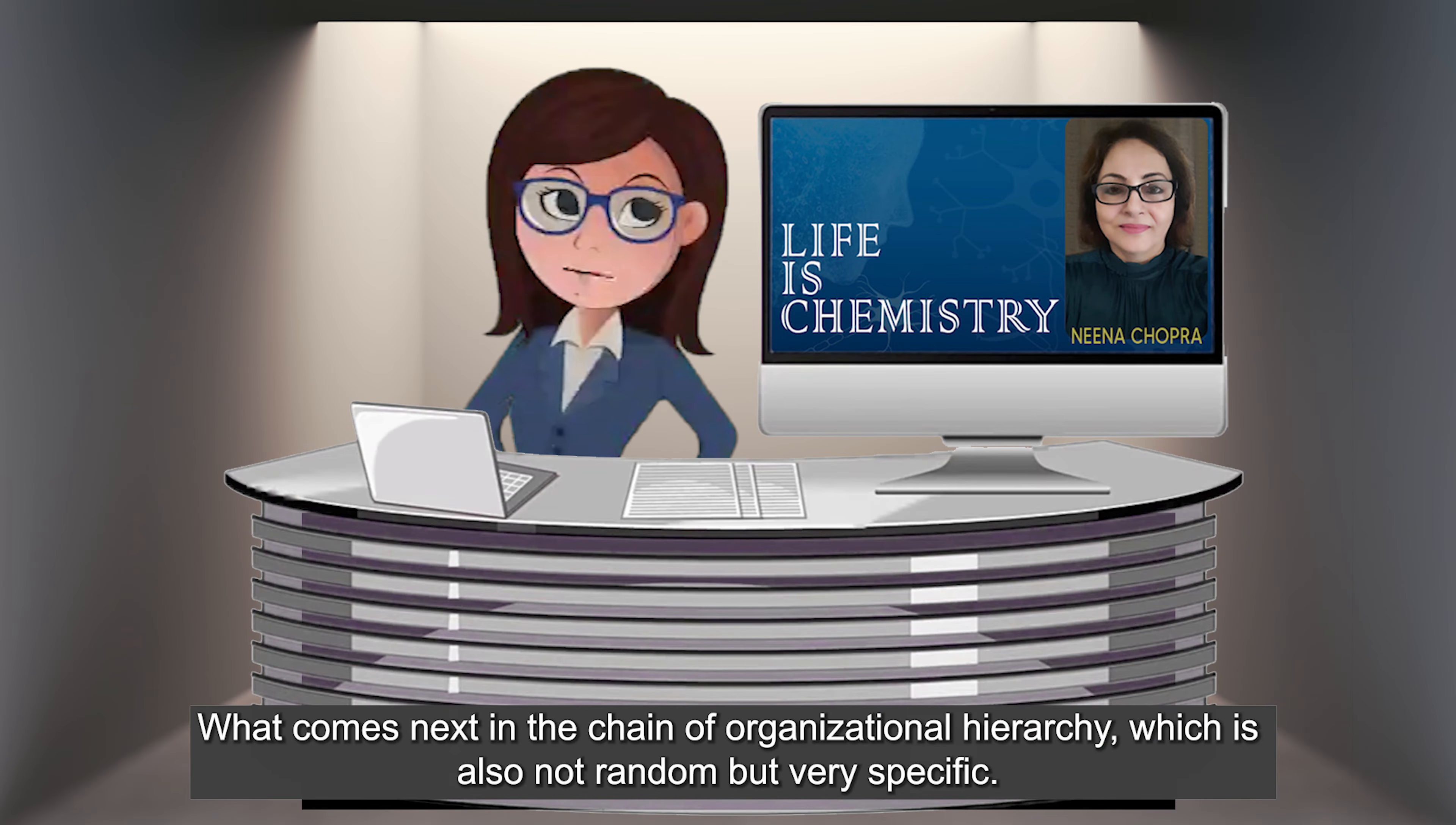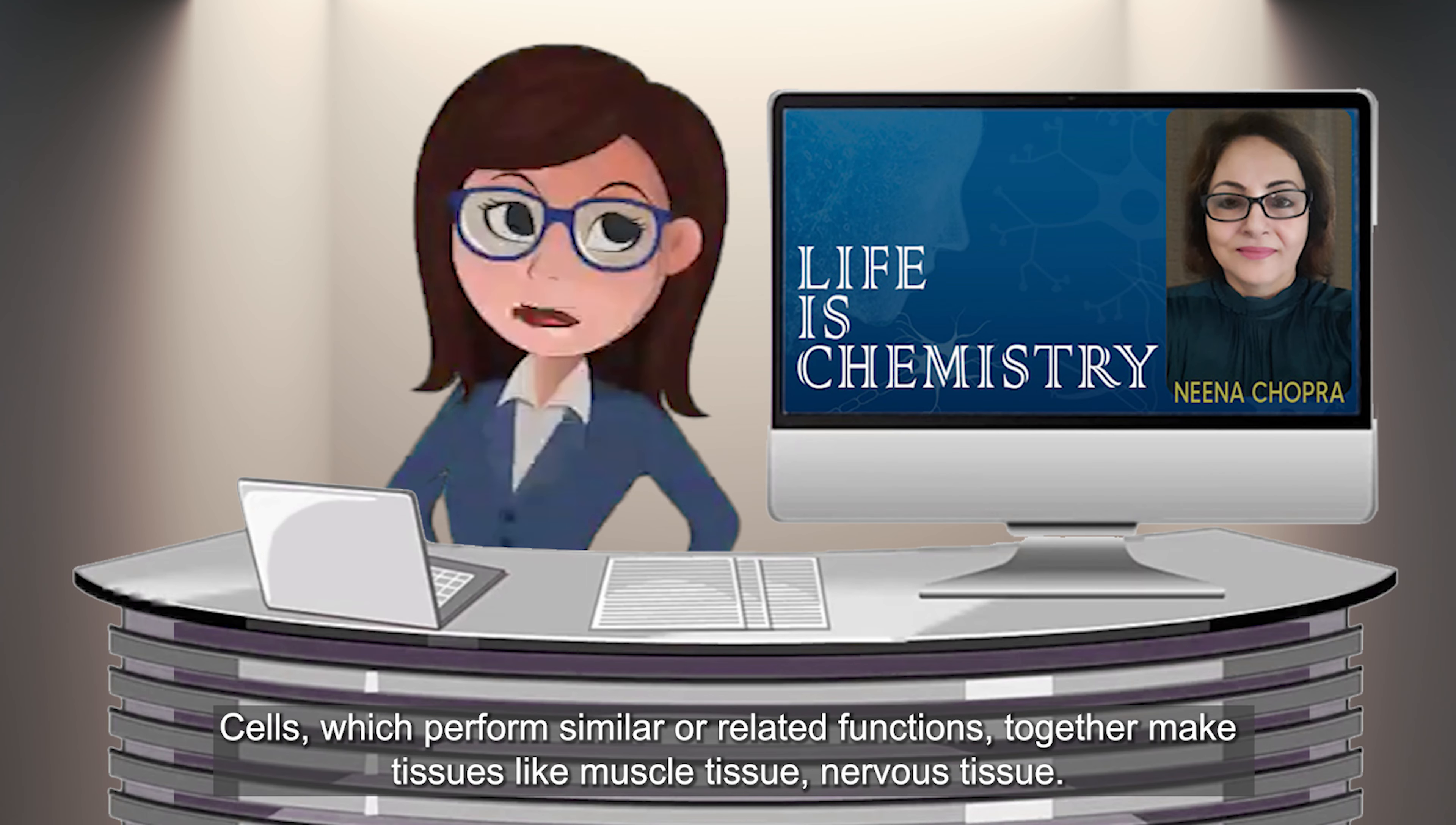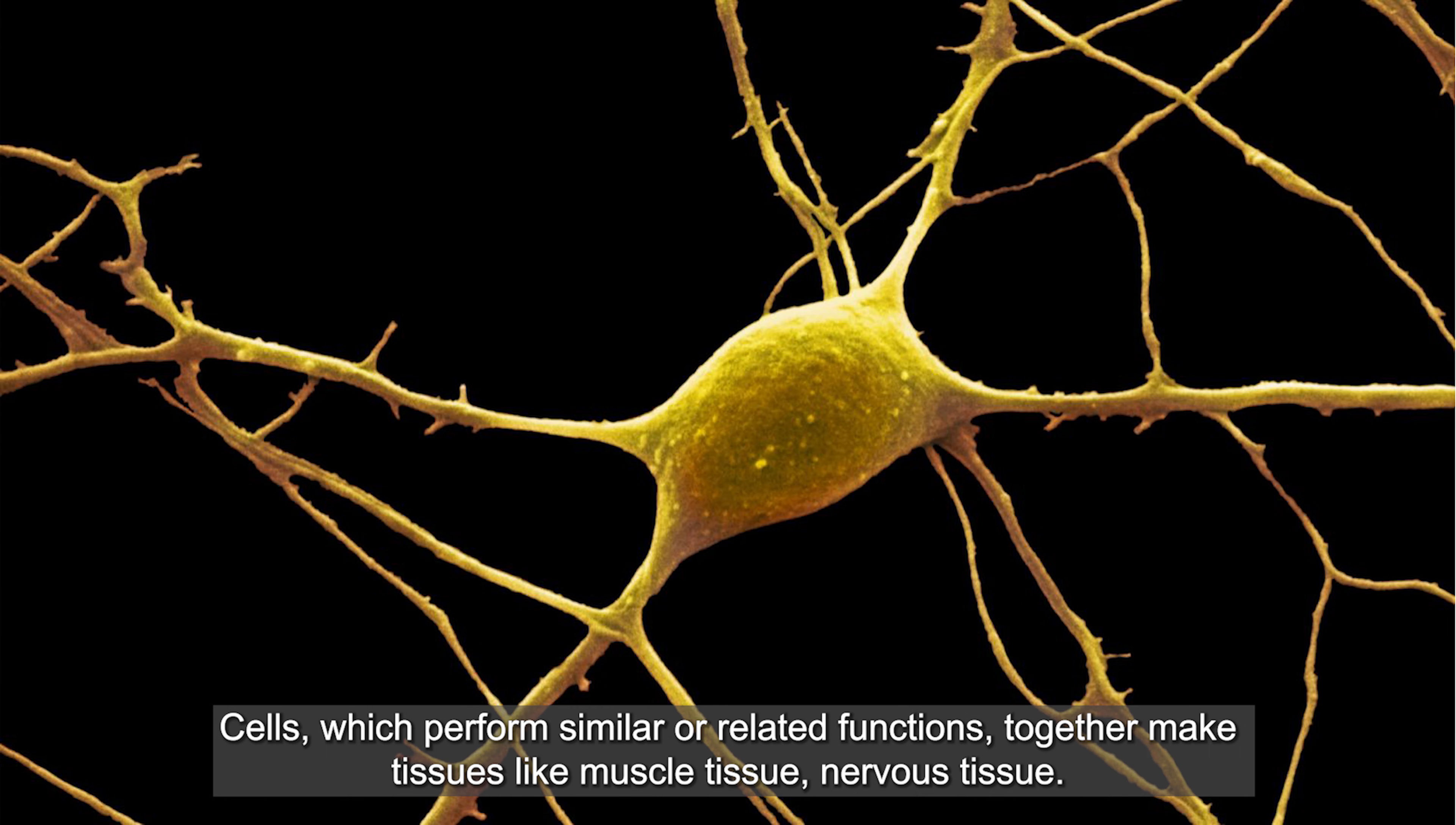So we have moved from a dead atom to an individual living cell. Now what comes next in the chain of organization, which is also not at all random? It is very specific.